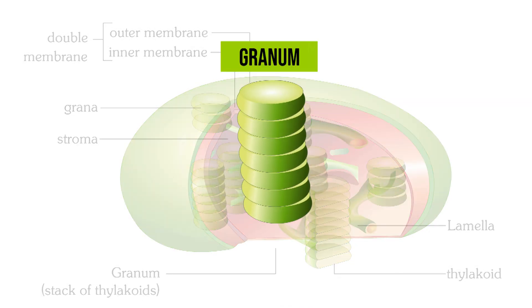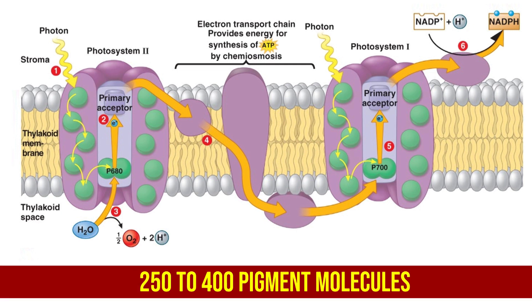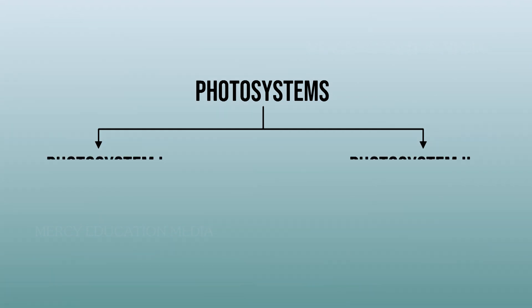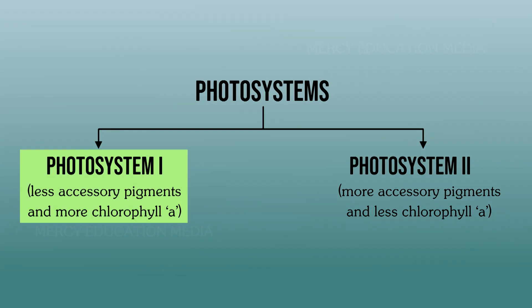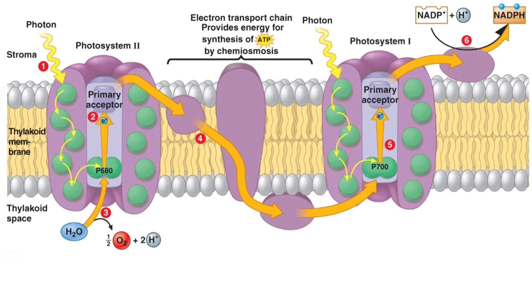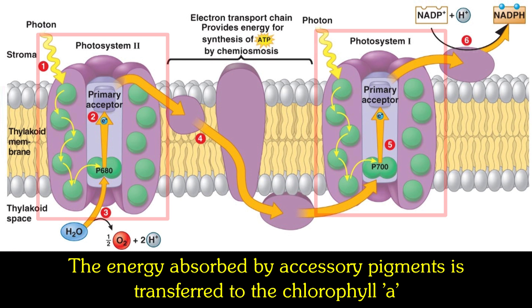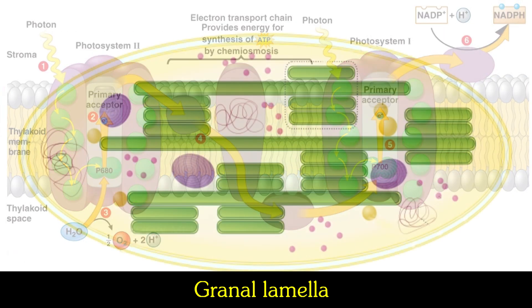Photosynthetic pigments occur in the granum. They constitute the pigment system called photosystem. About 250 to 400 pigment molecules are present in a photosystem. The photosystem is divided into photosystem 1 and photosystem 2. In photosystem 1 there are less accessory pigments and more chlorophyll a. In photosystem 2 there are more accessory pigments and less chlorophyll a. The primary function of photosystems is to trap light energy and convert it into chemical energy. The energy absorbed by accessory pigments is transferred to the chlorophyll a. The granum lamella where the photosynthetic pigments are aggregated to perform photosynthetic activities is called the active center.